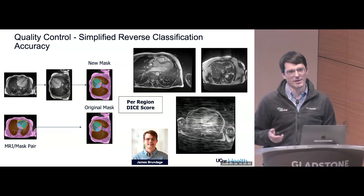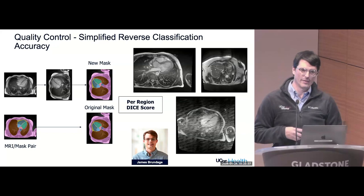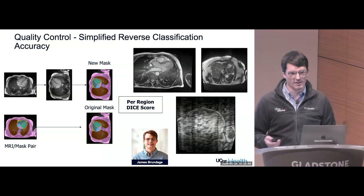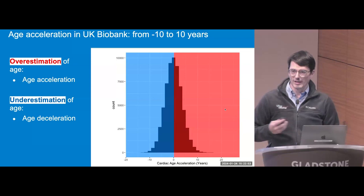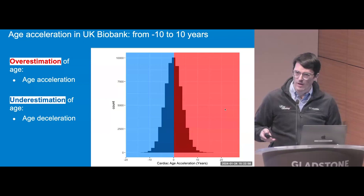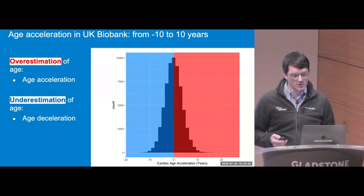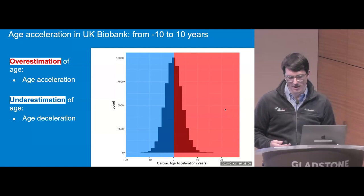There is substantial QC done upfront — images with the wrong view, the heart not visible, or excessive noise will show up as outliers on the age regression model. The distribution of cardiac age acceleration is, by definition in our population, mean-centered at zero, with a range from negative 10 to positive 10 years of age acceleration. People in red have accelerated cardiac aging — their heart looks older than expected for their chronological age — while those in blue appear younger.